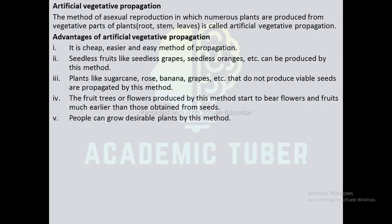Now we are going to discuss some advantages of Artificial Vegetative Propagation. It is a cheap, easier, and easy method of propagation. Seedless fruits like seedless grapes, seedless oranges, etc. can be produced by this method. Plants like sugarcane, rose, banana, grapes, etc. that do not produce viable seeds are propagated by this method. The fruit trees or flowers produced start to bear flowers and fruit much earlier than those obtained from seeds. People can grow desirable plants by this method.